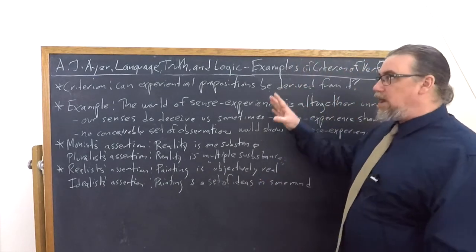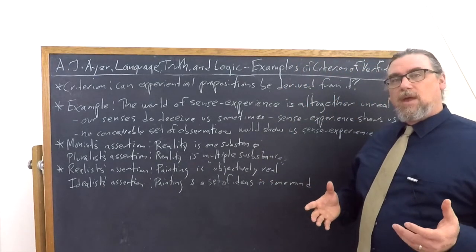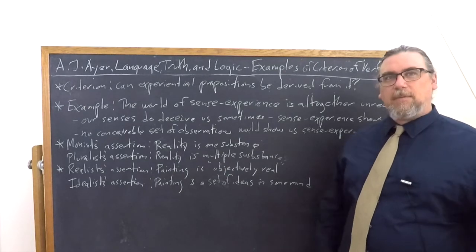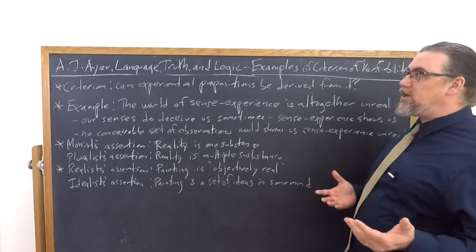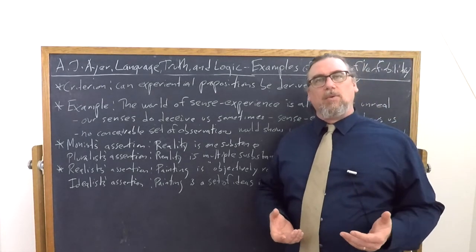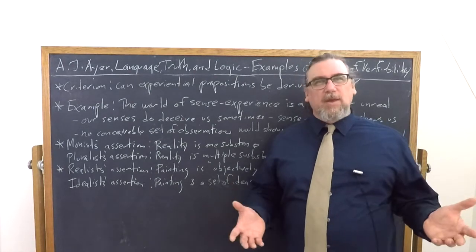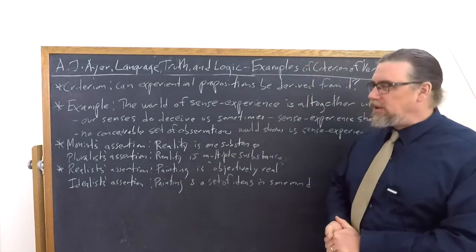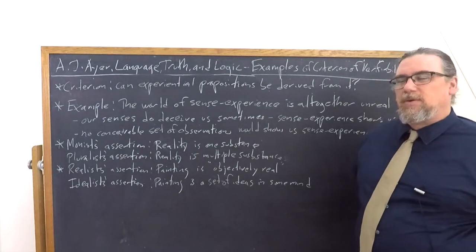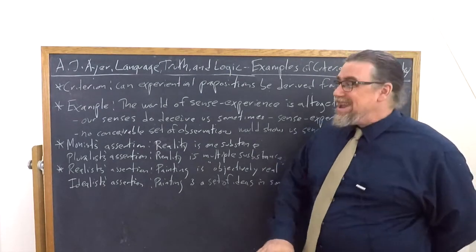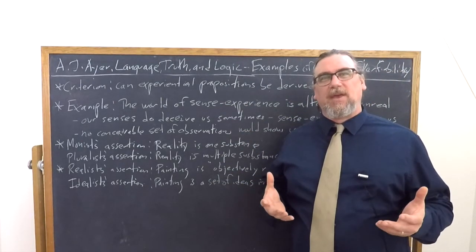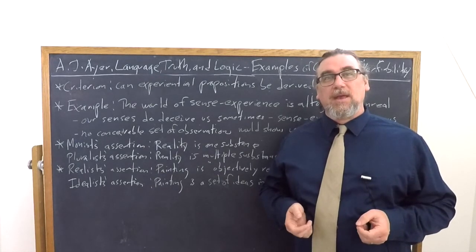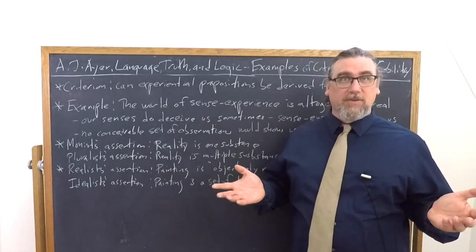So each of these provides us with an example of how this criterion of verifiability would be applied to the typical metaphysical disputes that were coming up around the time of A.J. Ayer, and which do arise in our own time, and will probably be around for centuries yet to come. They go far back into the history of philosophy as well. According to Ayer, none of these actually are verifiable. And so the metaphysics that they claim to express is merely nonsense in a literal sense. Thank you.